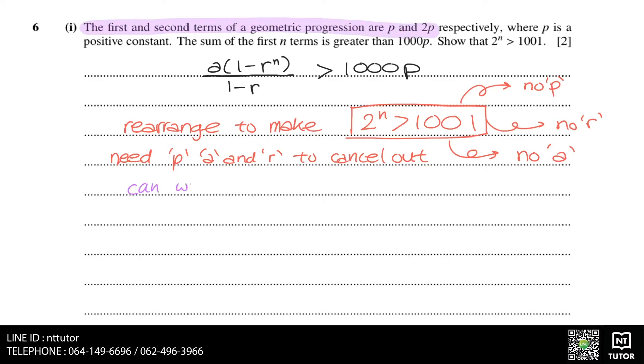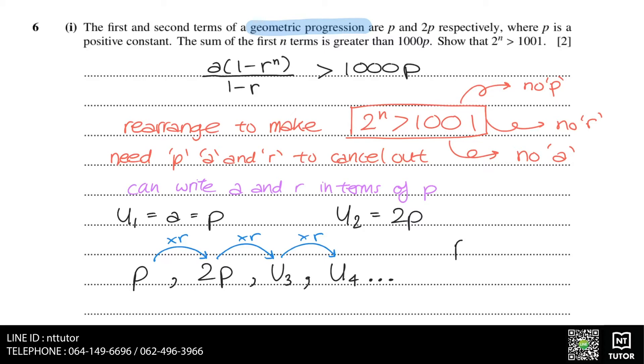From the other pieces of information, the first and second terms of a geometric progression are p and 2p. The first term is equal to a, therefore a equals p. Since the second term is equal to 2p, we can write out the geometric progression. In a geometric progression, the rule is to multiply by r each time. This means p multiplied by r should equal 2p, and therefore we can solve for r and get r equals 2.